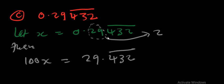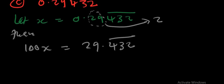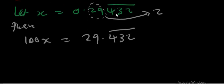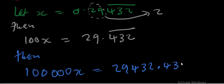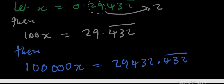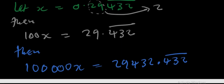The first step gets rid of those two non-repeating decimal places. Now we count everything — one, two, three, four, five decimal places total — so we multiply by a power of 10 with five zeros, which is 100,000. Therefore 100,000X = 29432.432̄, since 432 are the digits repeating themselves.